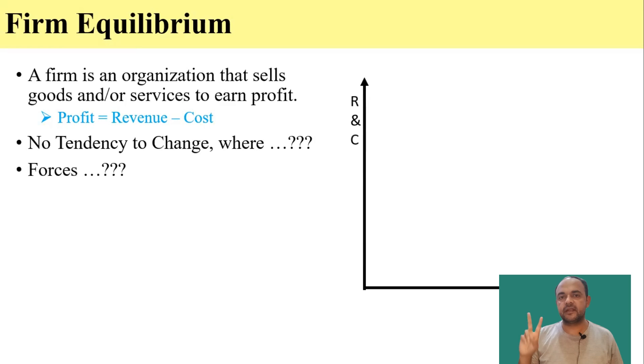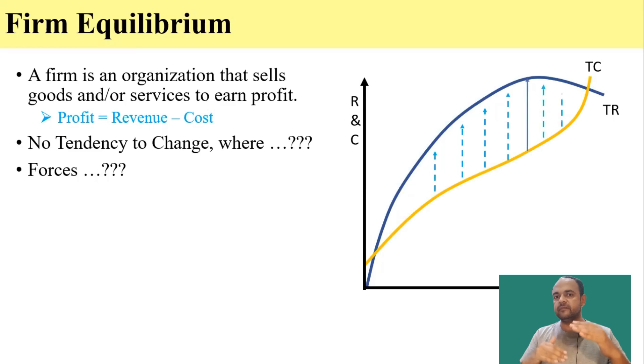We know that there are two forces. One is the total revenue which is a straight line when the market is perfectly competitive and a curve-like shape when the market is not perfectly competitive. And other force is total cost whose shape remains the same in any kind of the market.